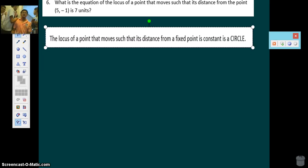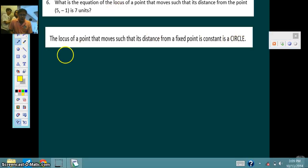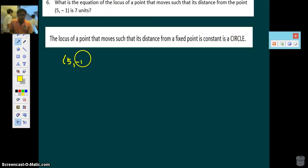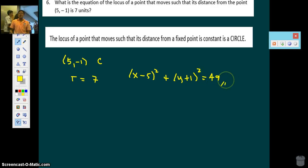The locus of a point that moves such that its distance from a point is constant is simply a circle. Amazing! So therefore, the fixed point here, which is 5, negative 1, is the center. And that 7 units, that is simply the radius. So what is the locus? It's a circle. And the circle is x minus 5 squared plus y plus 1 squared equals 49.